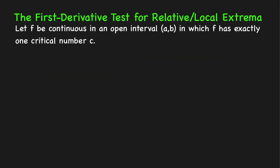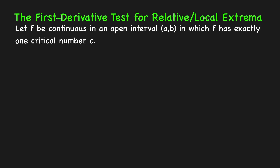Here's the first derivative test for relative or local extrema. Suppose we have a function f that is continuous in an open interval (a, b) in which f has exactly one critical number c. We're going to determine the signs of the derivative on the left-hand side of c and on the right-hand side of c to answer whether f has a local minimum or local maximum at c.